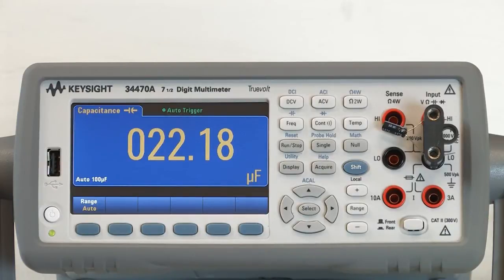To demonstrate the pre-math function, I've configured the DMM for a capacitance measurement. What we will do is first set up a math null for the measurement itself, and then we'll see how it is applied as a secondary measurement.